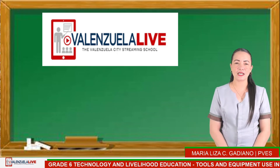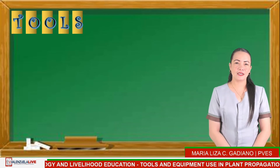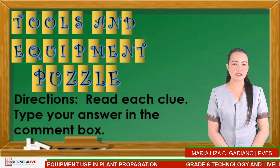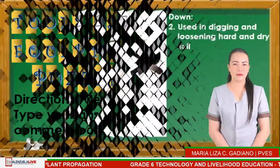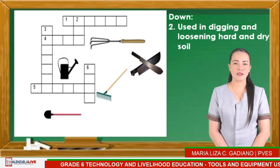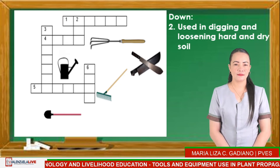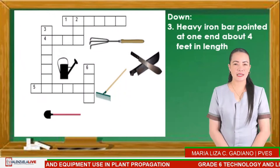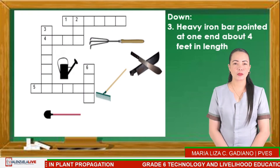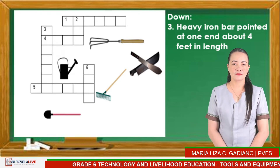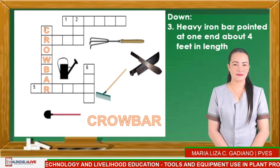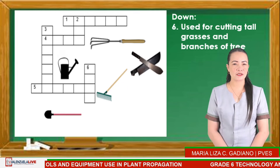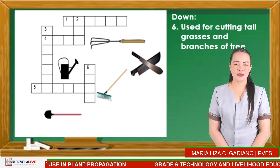Let us see how much knowledge you have gained in our lesson. For our first activity — tools and equipment puzzle — read each clue and type your answer in the comment box. Number 2 down: used in digging and loosening hard and dry soil. Number 3 down: heavy iron bar pointed at one end about four feet in length — the answer is crowbar. Number 6 down: used for cutting tall grasses and branches of trees — the answer is bolo.